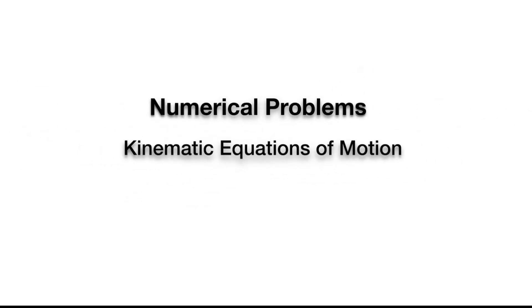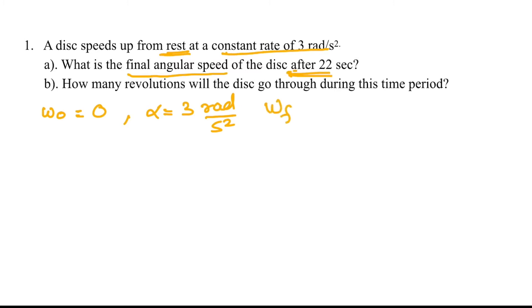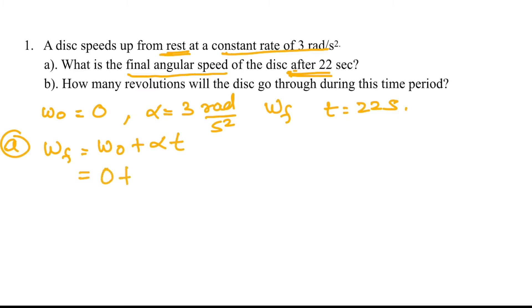Now let's check out some numerical problems based on kinematic equations for rotational motion. Example 1: A disk speeds up from rest (omega_0 = 0) at a constant rate of alpha = 3 radians per second squared. We need to find the final angular speed omega_f after t = 22 seconds. Using the formula omega_f = omega_0 + alpha × t, we get 0 + 3 × 22 = 66 radians per second.